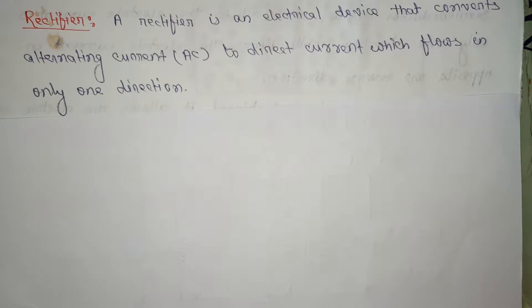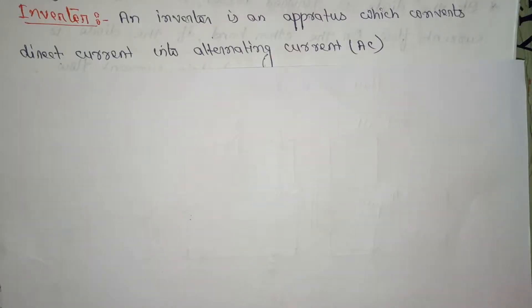Second definition: inverter. An inverter is an apparatus or equipment which converts direct current into alternating current.